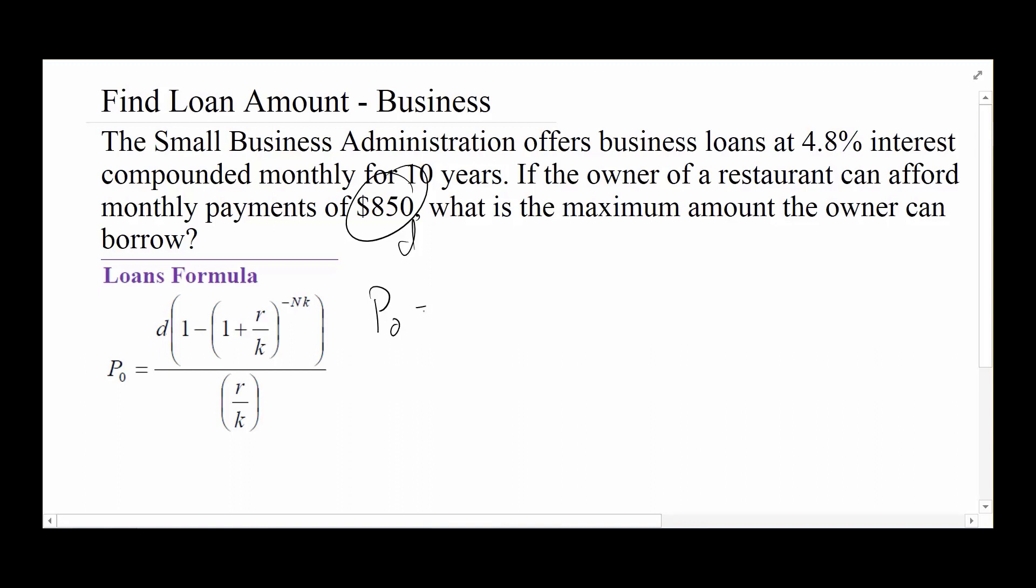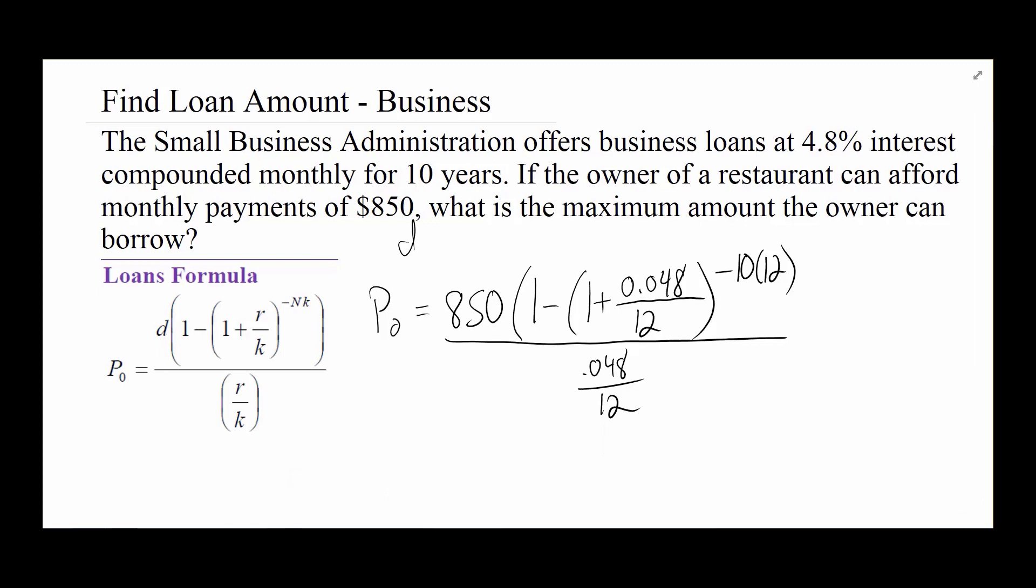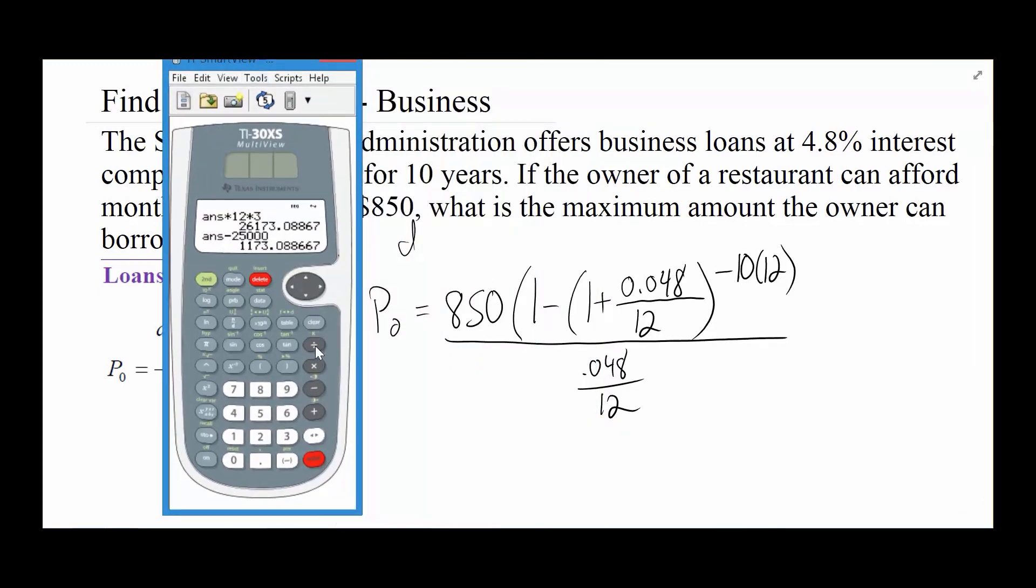So in this case, we're plugging in directly that we can say $850 times 1 minus 1 plus. Now the interest rate in this case was the 0.048, so 4.8%. And this was monthly, so K is 12. And he was going to do this over 10 years. So we were looking at 10 years, again monthly, so K is still 12. And then over 0.048 over 12. Once we have all those numbers, it's just a matter of plugging into the formula.